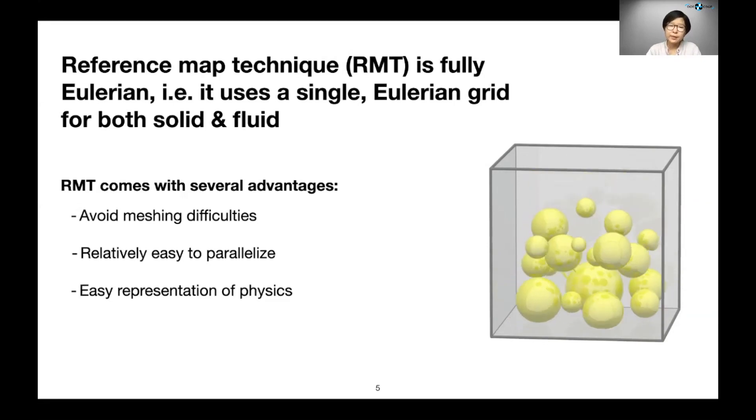Certain types of physics is also easy to represent on a fixed grid. For example, you're seeing a simulation of 20 spheres sediment in a box here, and the contact between the objects is easy to compute on a fixed grid.